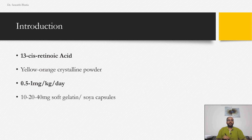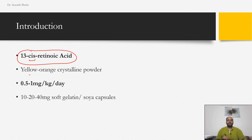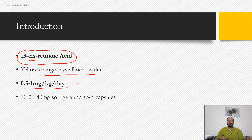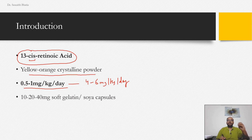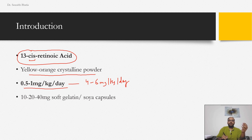Isotretinoin is 13-cis retinoic acid — you can remember this by the word 'cis,' similar to 'iso.' It is a yellow-orange crystalline powder. The standard dose is 0.5 to 1 mg/kg/day, though articles mention going as high as 4 to 6 mg/kg/day. There are also articles supporting very low doses — as low as 0.5 to 1 mg/kg/week — as beneficial in the long run for certain indications.